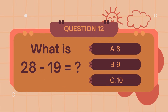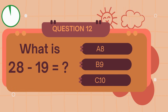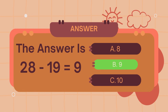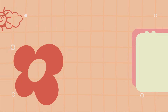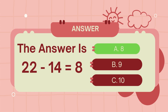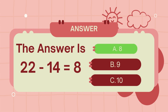What is 28 minus 19? The answer is 9. What is 22 minus 14? The answer is 8.